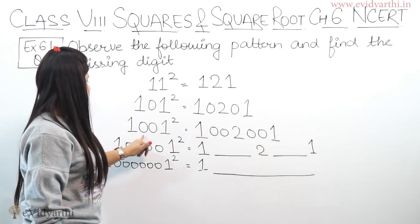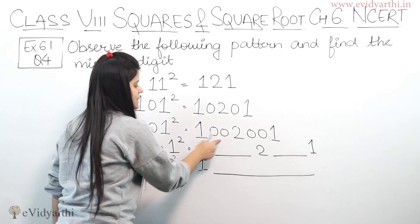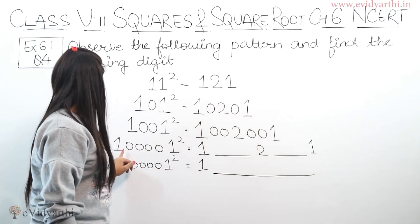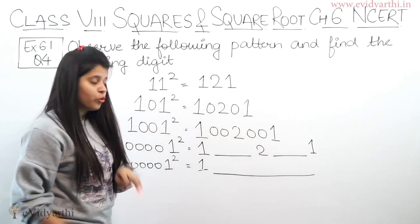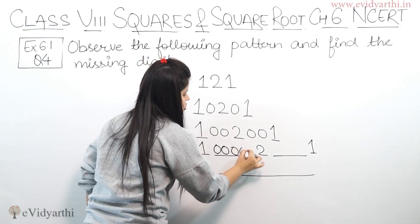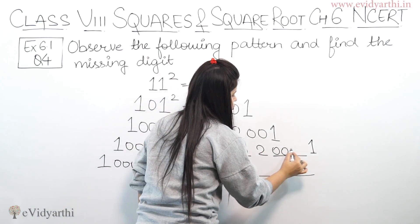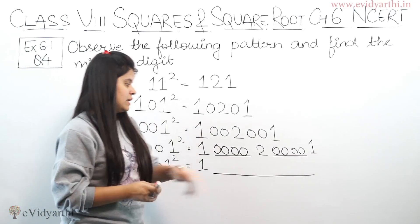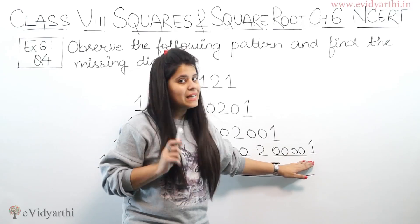Then 1001 is 1002001. Means 2 की इस साइड भी 2 zeros, उस साइड भी 2 zeros, right, same. Now which is 10000, कितनी 0s हैं? 4. So means 1 के बाद 1, 2, 3, 4 zeros फिर 2 आ गया and 1, 2, 3, 4 zeros उसके बाद 1 है. Again वही हो गया 2 की इस साइड भी 4 zeros, 2 के उस साइड भी 4 zeros.